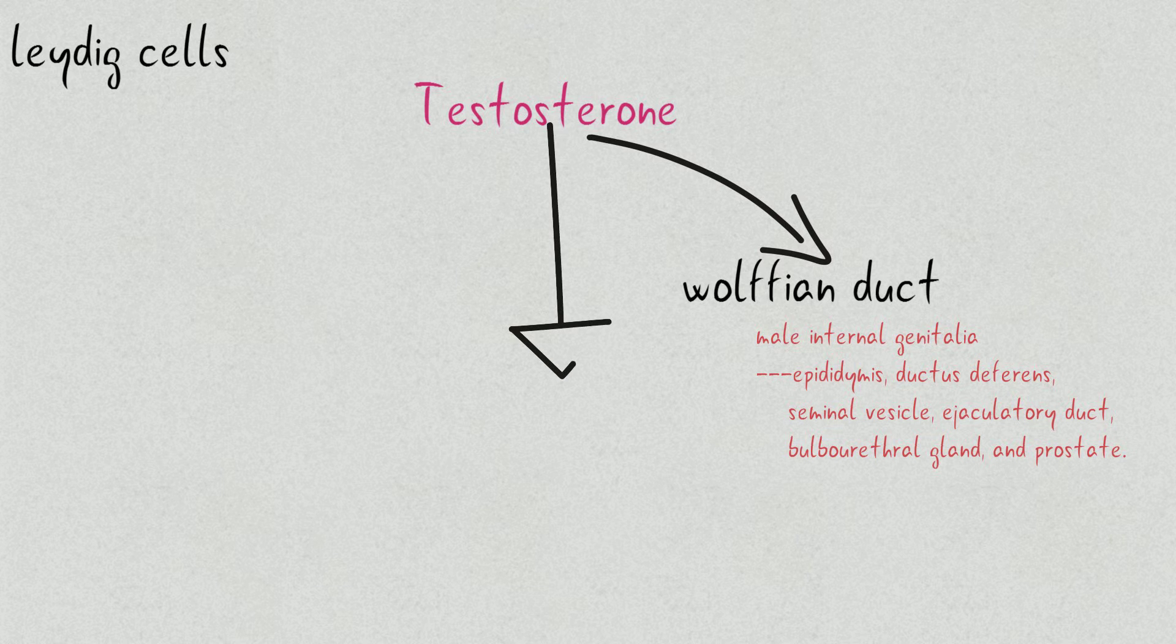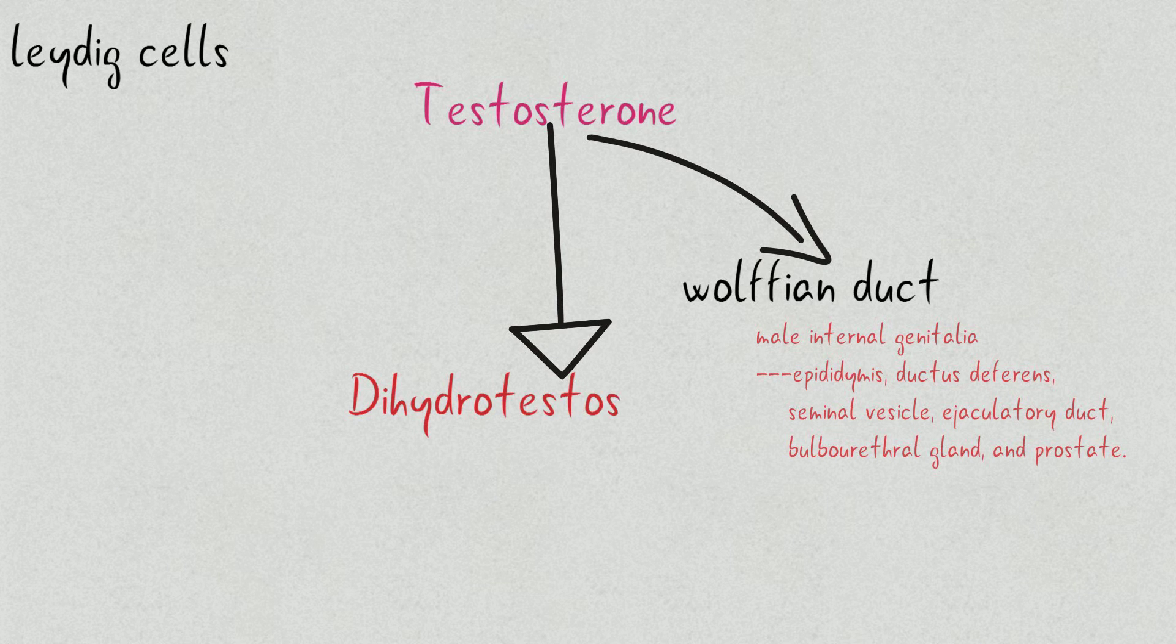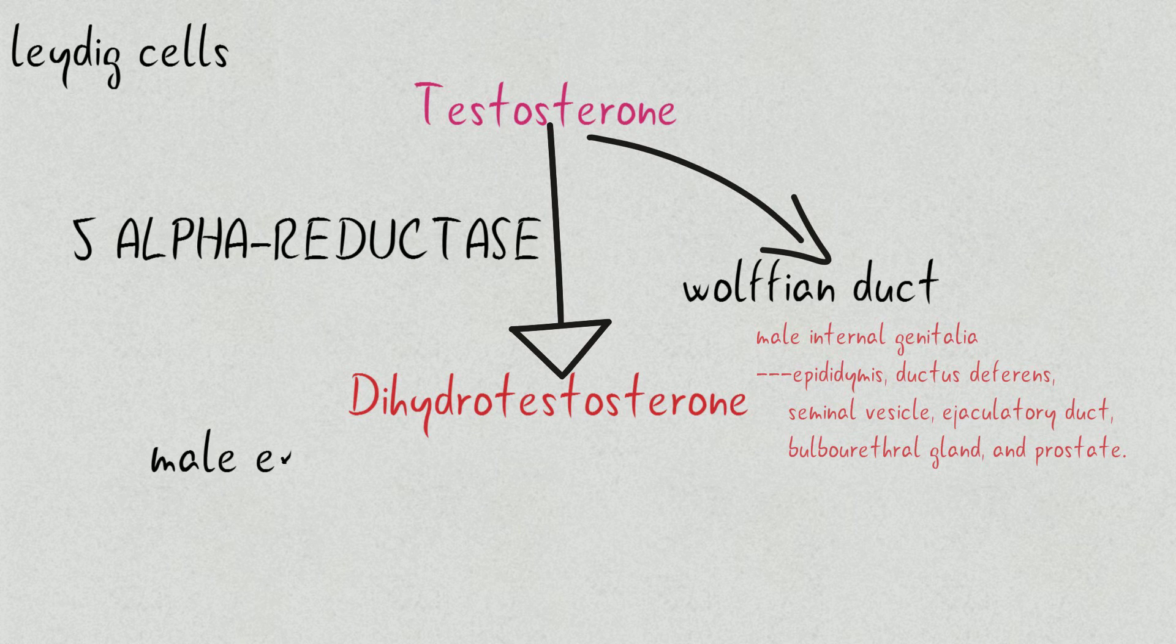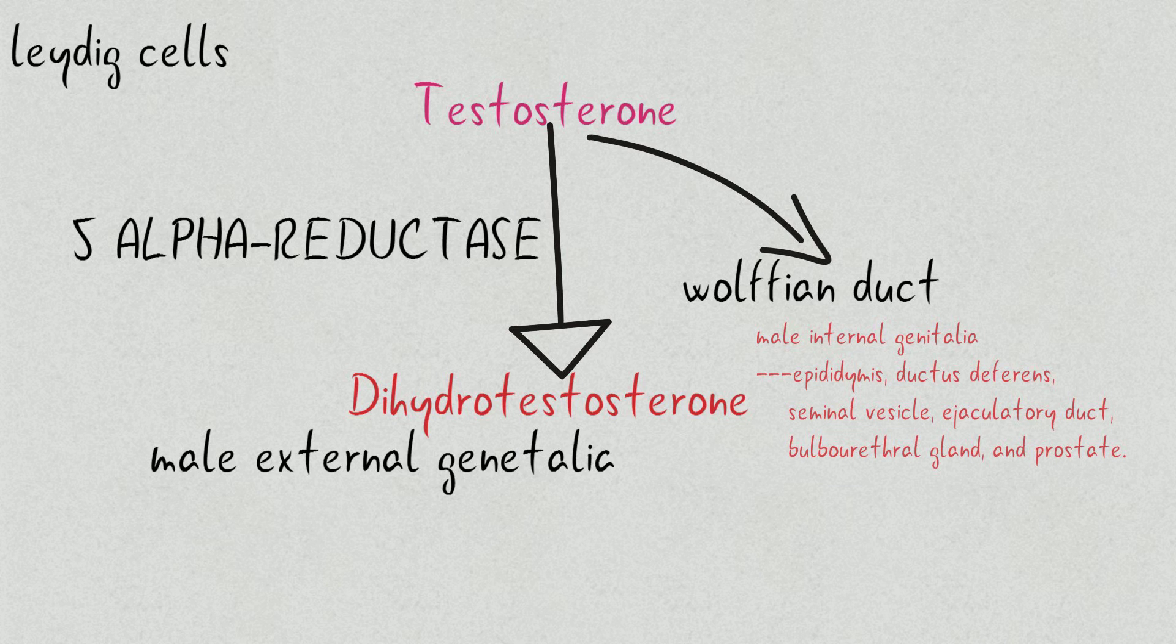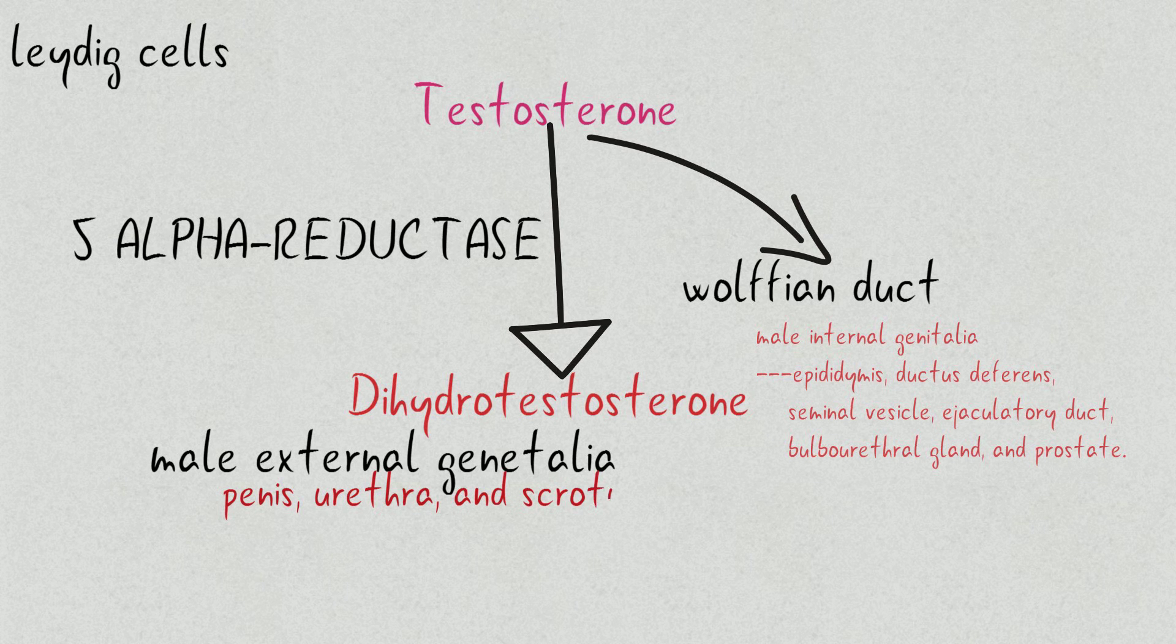After the 10th week, testosterone is converted into dihydrotestosterone by the enzyme 5-alpha reductase. This dihydrotestosterone leads to the formation of male external genital organs like the penis and scrotum.